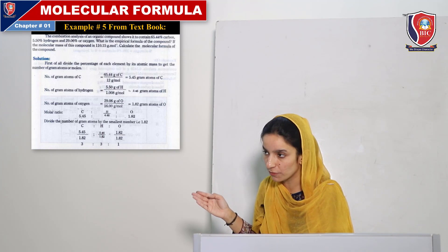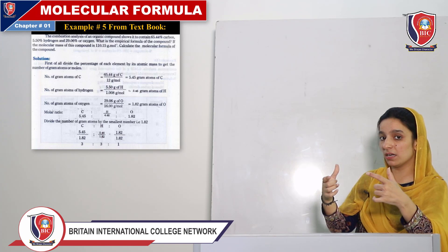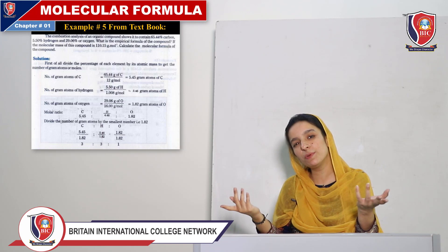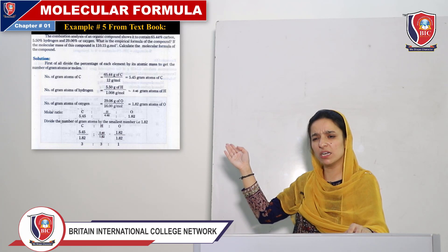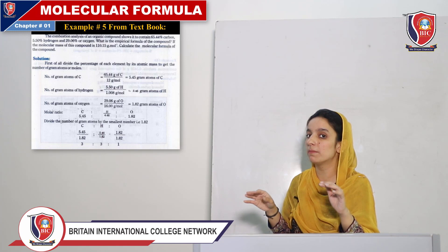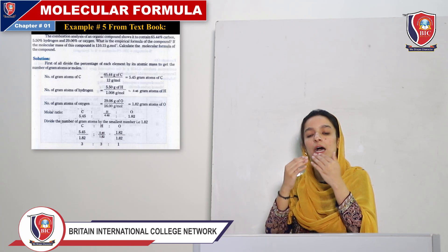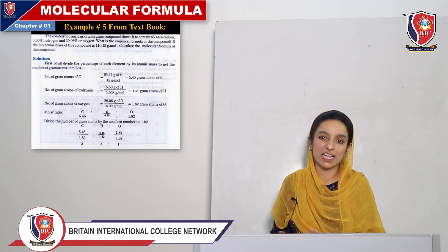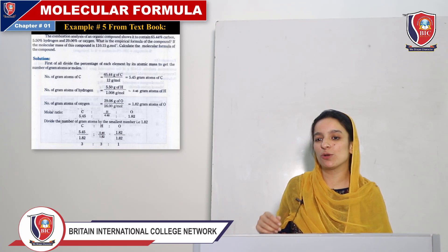The molecular mass of this compound is 110.15 g/mol. We simply need to find the empirical formula first, then use n to calculate the molecular formula using: molecular formula is equal to n empirical formula. The empirical formula has four steps. Step 1 was given to us — the percentage composition: carbon percentage, hydrogen percentage, and oxygen percentage are all provided.